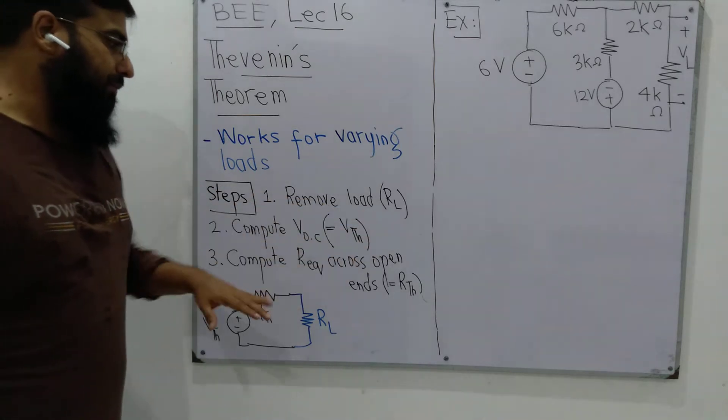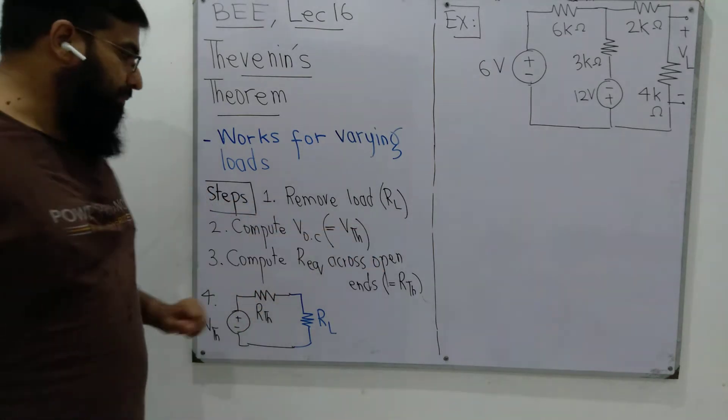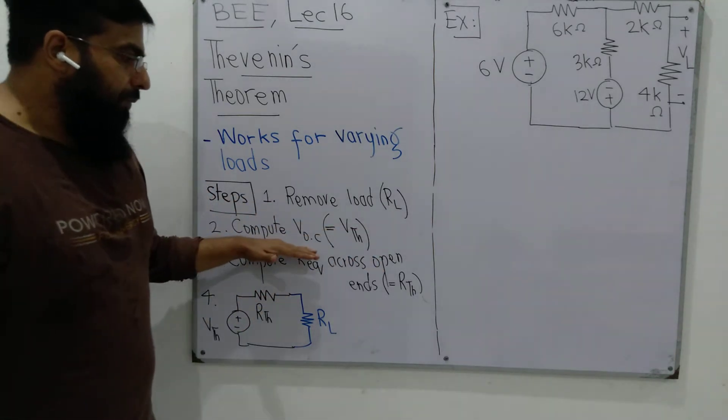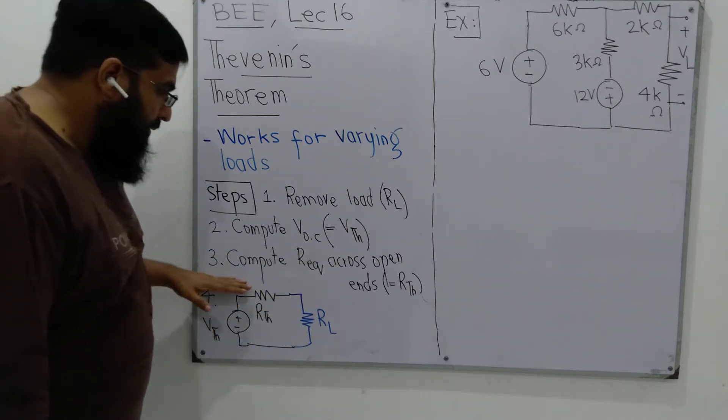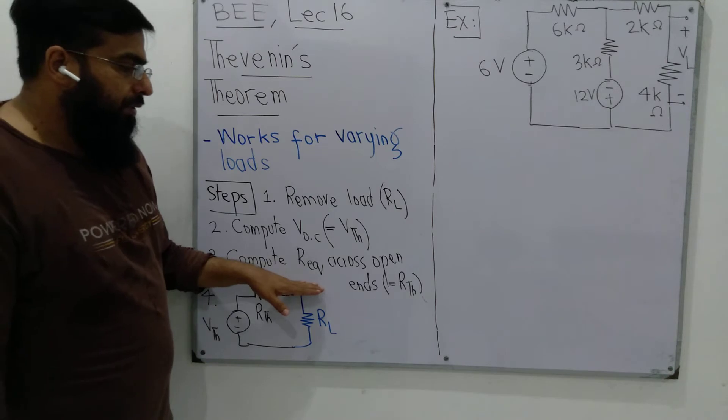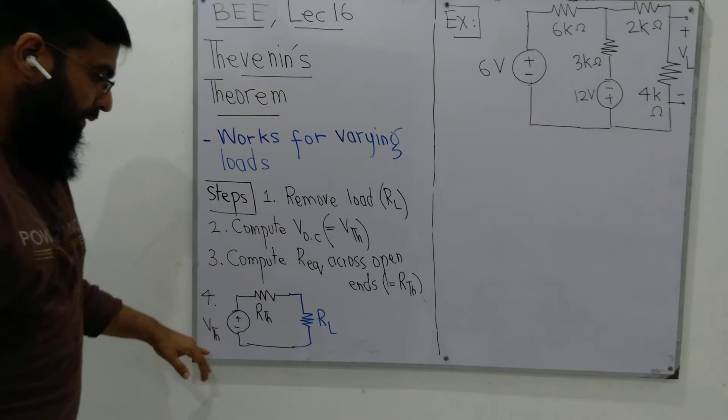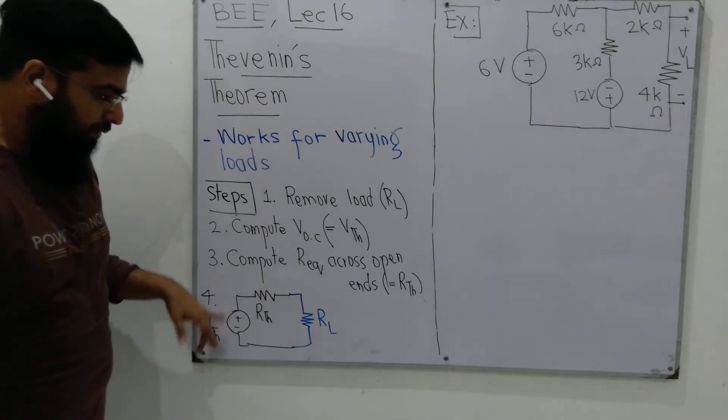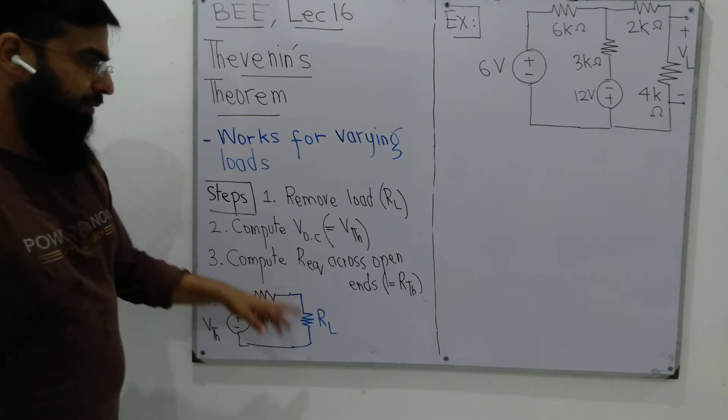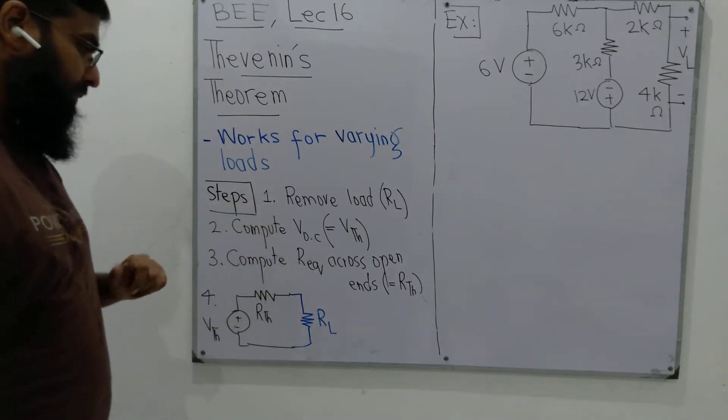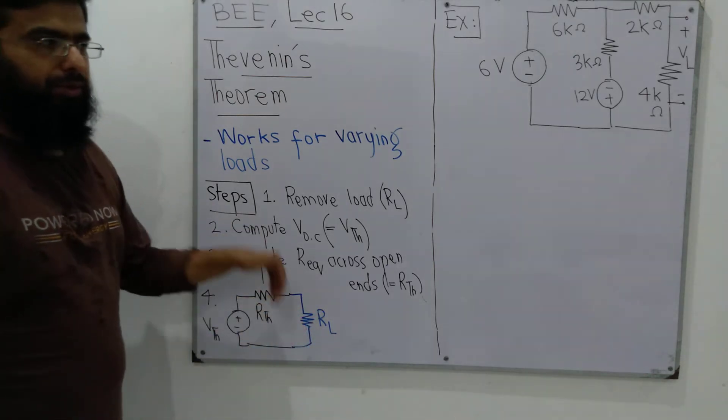There are four different steps to solve a circuit for an unknown value using Thevenin's theorem. First, we remove the load since we are working with DC circuits right now, so RL would be the load. We compute the open circuit voltage across the open ends and call it Vthevenin. Then we compute R equivalent across the open ends and call it Rthevenin. Then we make a series circuit with Vthevenin source and Rthevenin in series, put the load back, and solve for the required quantity.